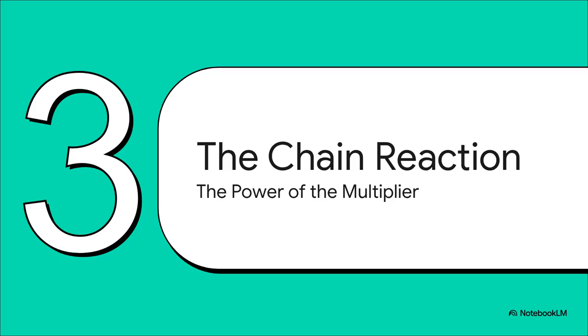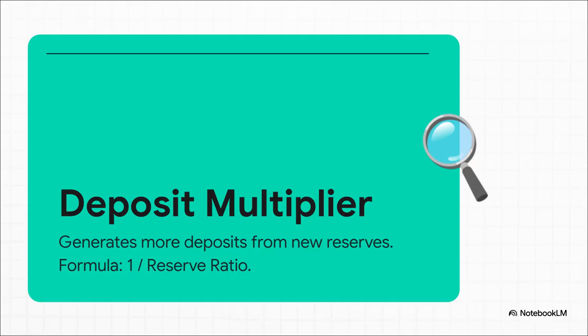That 200 shekel bump is not the end of the story — not even close. It's just the beginning. Now we get to the really cool part: the multiplier effect. The key concept here is the deposit multiplier. Banks don't have to keep every single dollar you deposit sitting in a vault — they only have to hold on to a small fraction of it. That's called the reserve ratio. The rest they can lend out. And when they lend it out, that loan becomes a new deposit in someone else's account, which the bank can then lend out a piece of again and again. The formula for figuring out just how big this chain reaction can get is simple: it's just 1 divided by the reserve ratio.